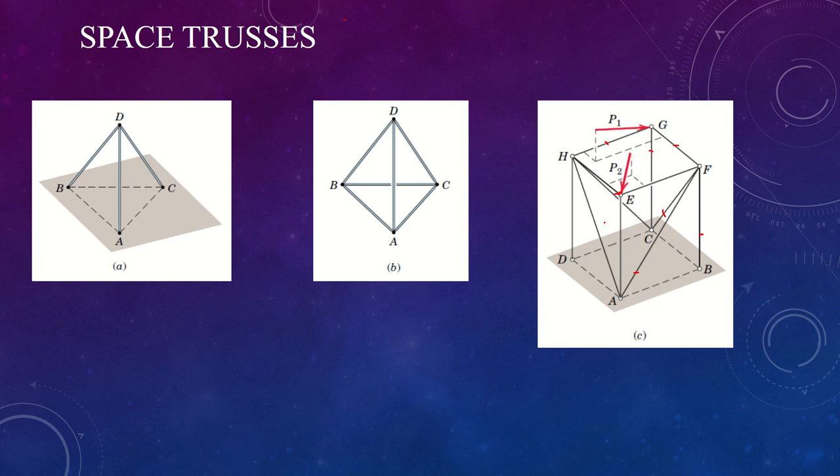Because the equilibrium of each joint is specified by three scalar force equations, and there are in all J joints, we have three J equations for the space truss. For the entire truss composed of M members, there are M unknowns. Let capital M be the number of members, which equals the number of unknowns, plus six unknown support reactions. In the general case of a statically determined space structure, there must be M plus 6 equals 3J. M plus 6 is the number of members plus six reactions, equal to three times J, where J is the number of joints.